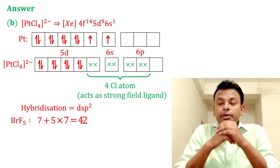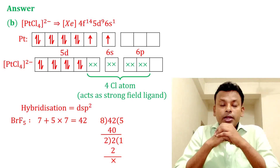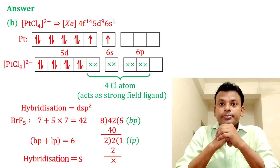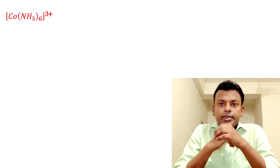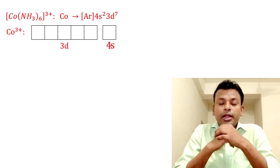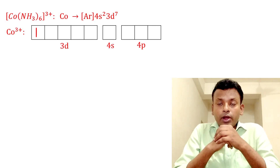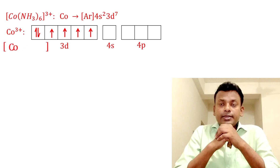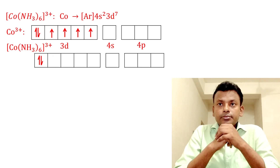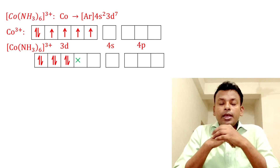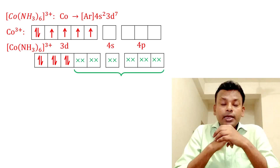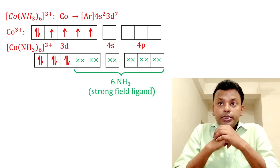Next, for BrF₅: bond pair plus lone pair electrons equals 5 + 1 = 6, so hybridization is sp³d². Next, for Co(NH₃)₆³⁺: cobalt has its electronic configuration, and Co³⁺ has 6 electrons in the 3d orbital with 4 unpaired electrons. Here NH₃ acts as a strong field ligand, so it pairs up the unpaired electrons, giving hybridization d²sp³.